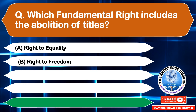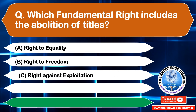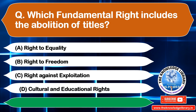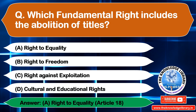The next question is: which fundamental right relates to the abolition of titles? Option A: Right to Equality, Option B: Right to Freedom, Option C: Right Against Exploitation, Option D: Cultural and Educational Rights. The correct answer is Option A: Right to Equality — Article 18.